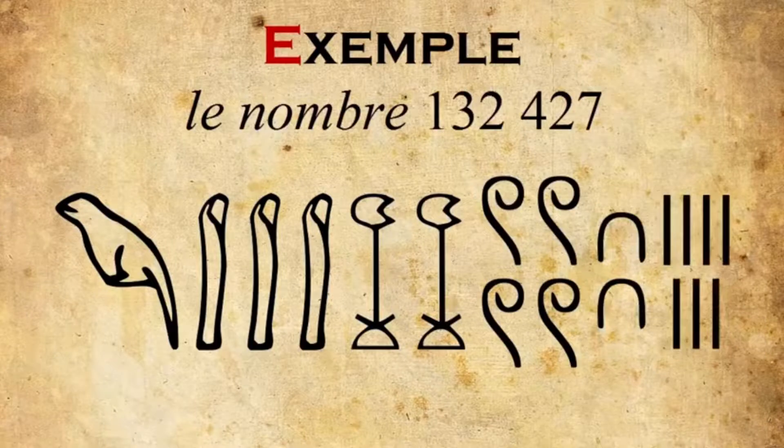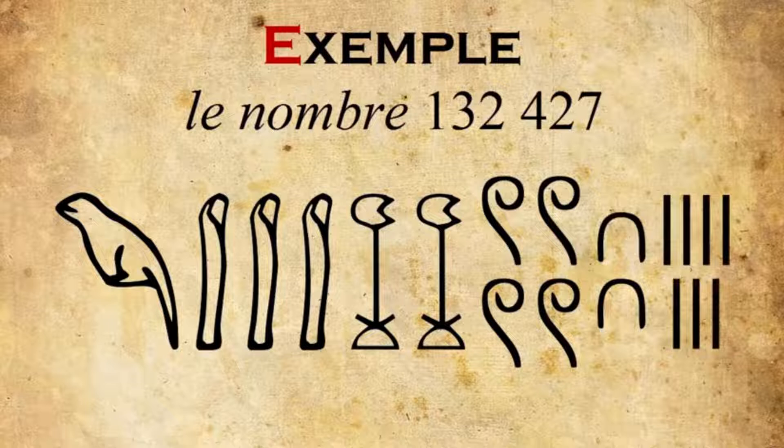For example, for the number 132,427, represented the way you see it on the screen: one for the hundred thousands, three for the tens of thousands, two for the thousands, four hundreds, two for the tens, and seven for the units. You can try to practice at home by trying to write numbers in hieroglyphs.